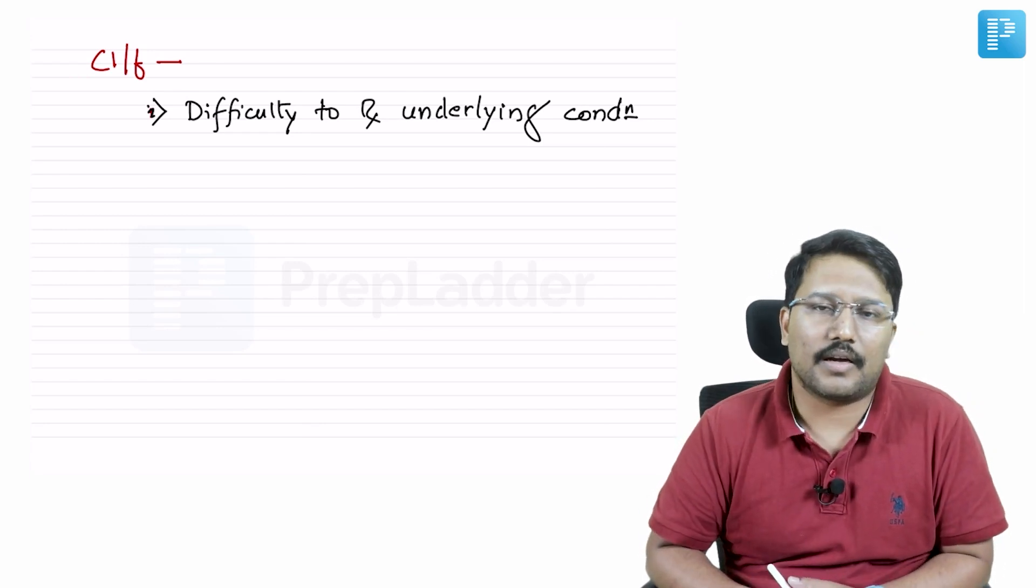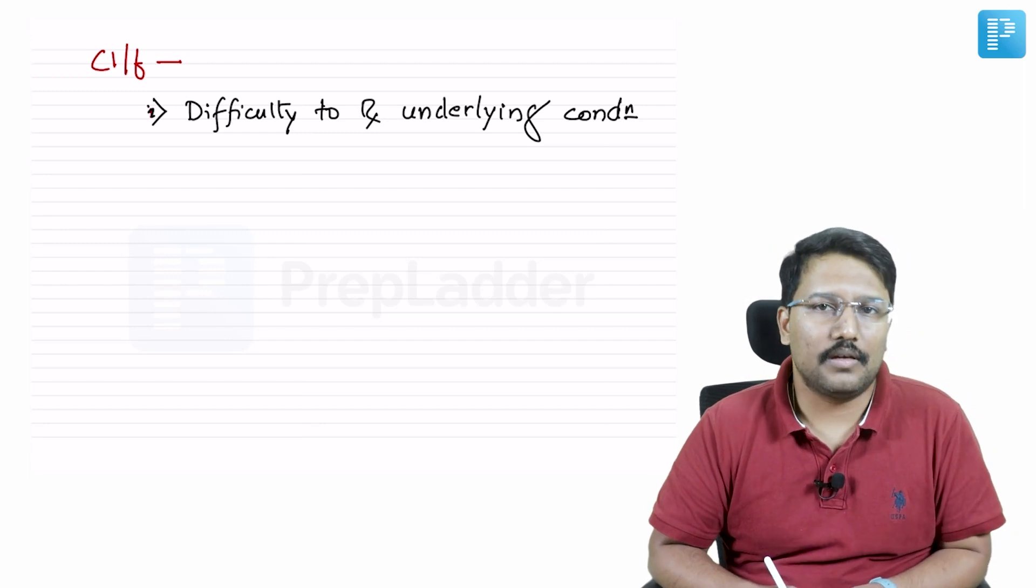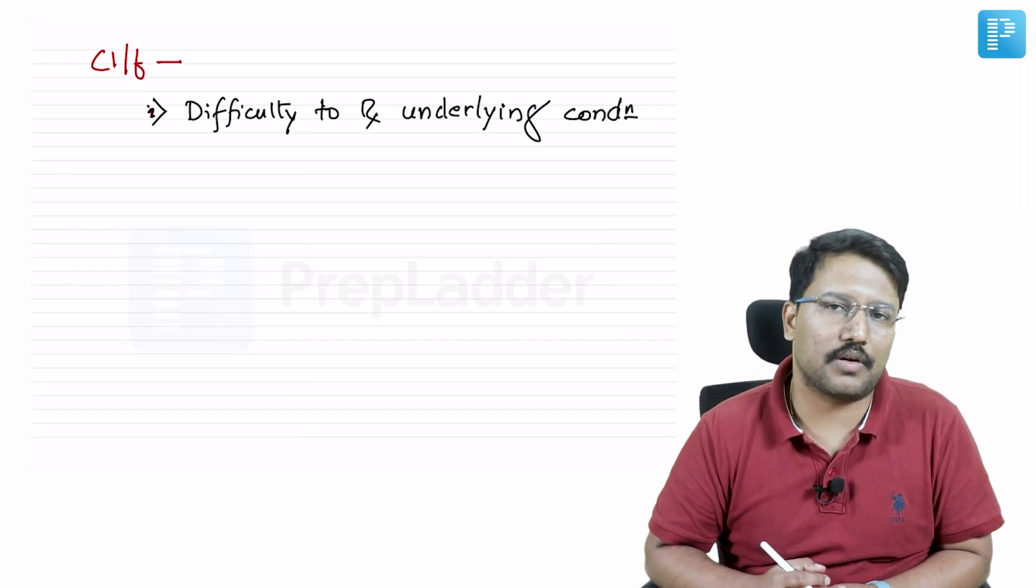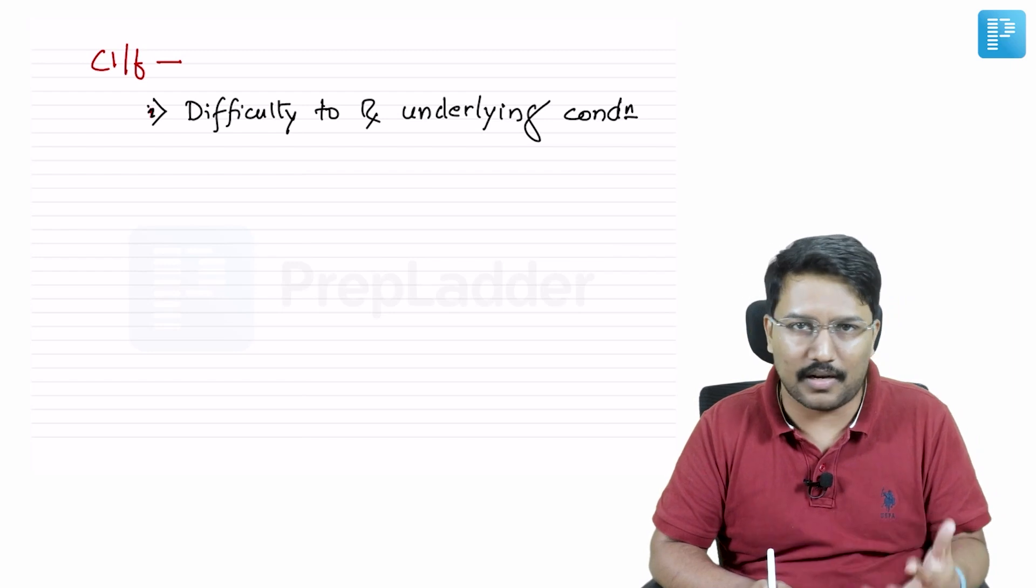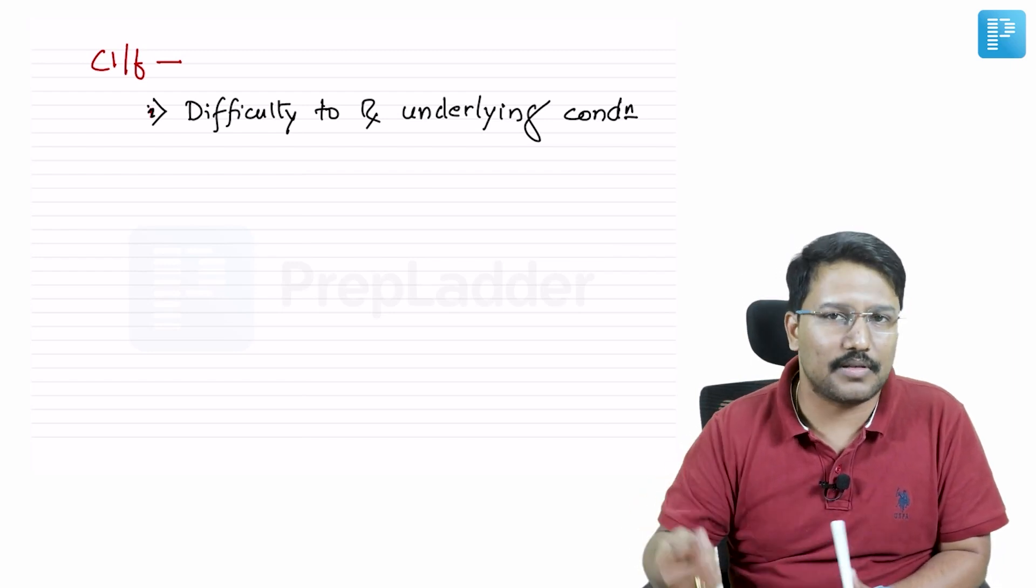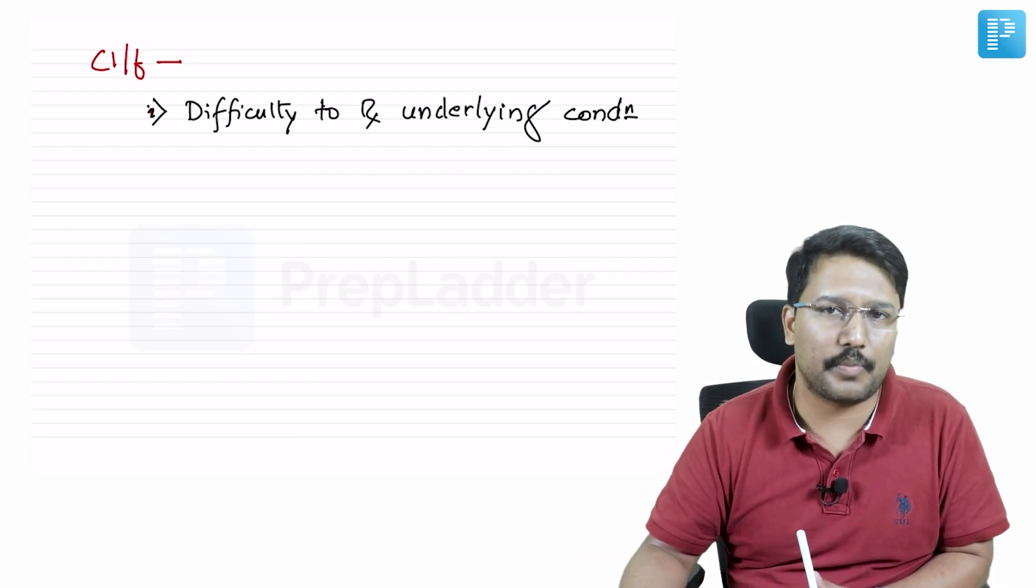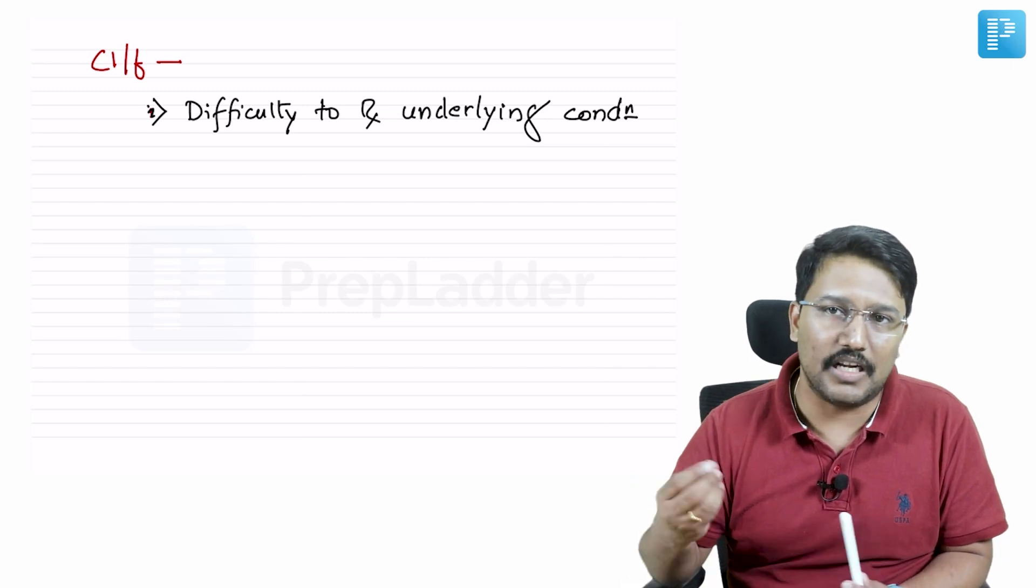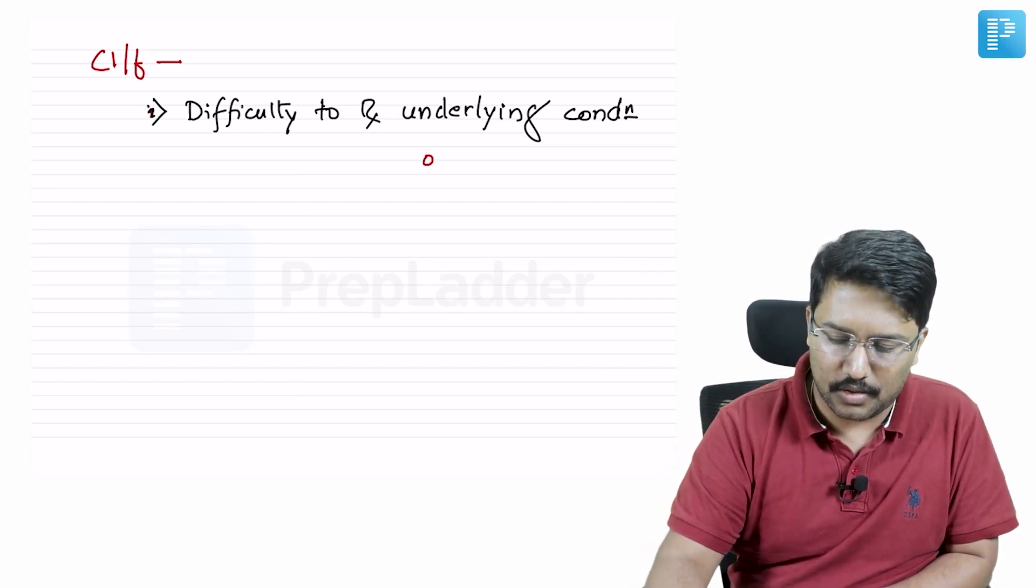After that, the same medications are unable to control it. It keeps requiring escalating doses of medications and eventually lands up with the need for oral corticosteroids. That's the usual story of a patient of allergic bronchopulmonary aspergillosis in an asthmatic.